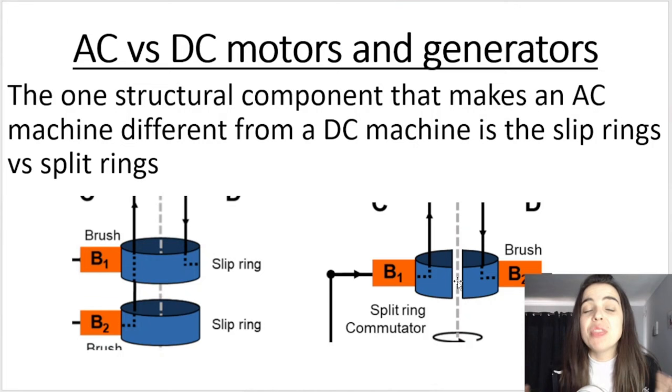Those components and changing those components, what that does is it converts either a generator or motor from an AC generator to a DC generator or AC motor to a DC motor. It's a structural component that makes an AC machine different from a DC machine.